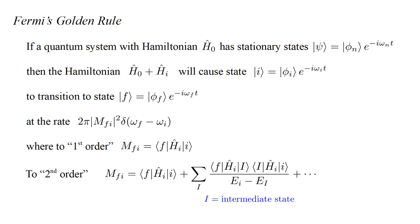By conservation of energy, the energy of the final state must equal the energy of the initial state. But the intermediate states are occupied only briefly, so the uncertainty principle allows their energies to differ from the initial energy.